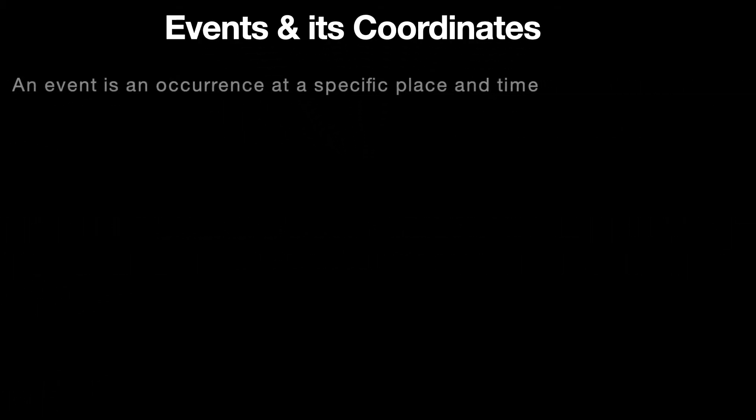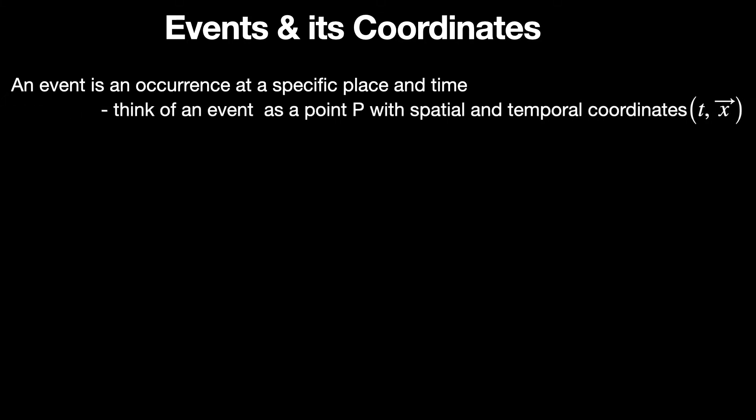An event is an occurrence, something happening somewhere at some instant of time. Here something is the event, somewhere refers to its location in space, and at some time refers to the timestamp associated with it. To locate this somewhere quantitatively, an observer associates three spatial coordinates to it, say the Cartesian coordinates x, y, z or spherical polar coordinates r, theta, phi. Similarly, the timestamp is that particular reading of the observer's clock which is simultaneous with the occurrence in question. Thus, in physics, we think of an event as a point P with spatial and temporal coordinates.